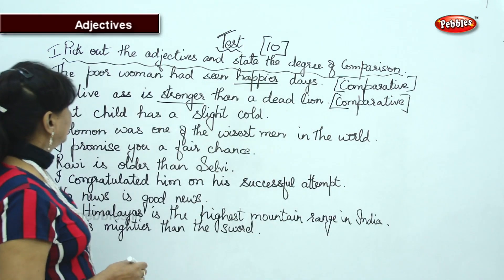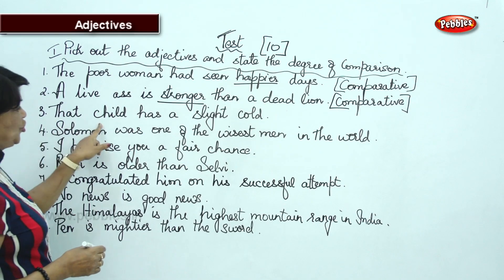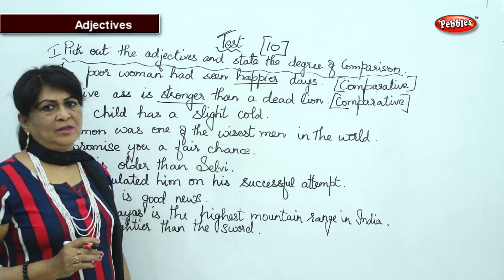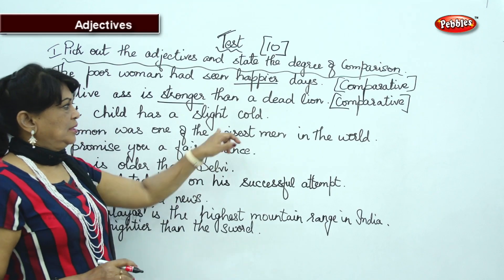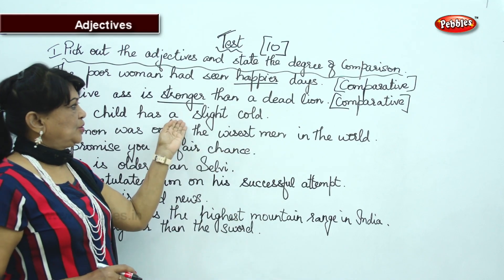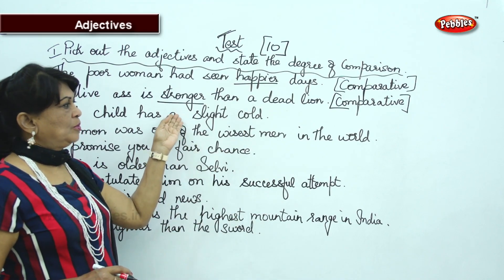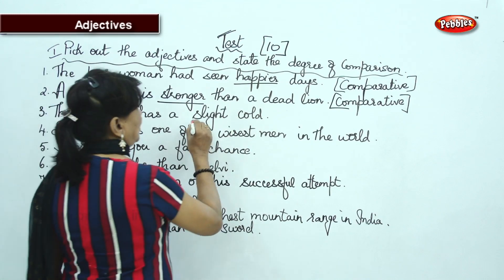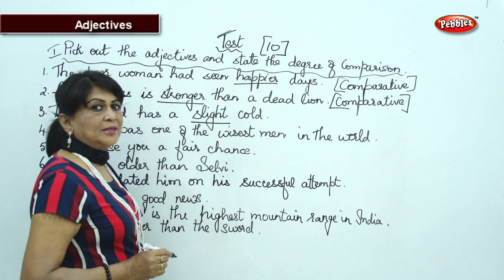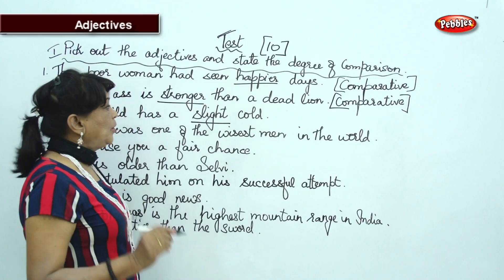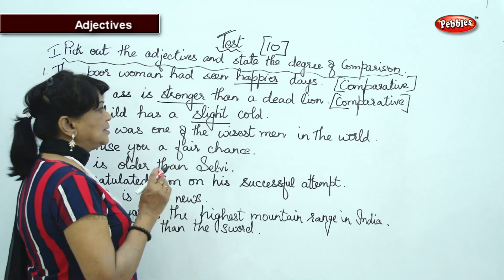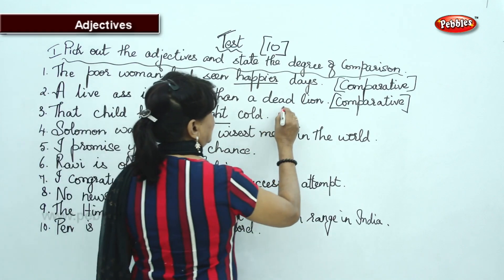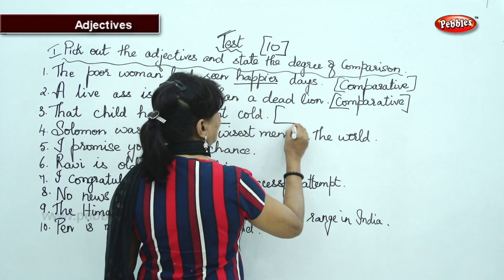Next one: 'That child has a slight cold.' There is no -ER, there is no more or most, there is no -EST, so what degree is this adjective? It is positive degree. Slight, slighter, slightest — so it is positive.